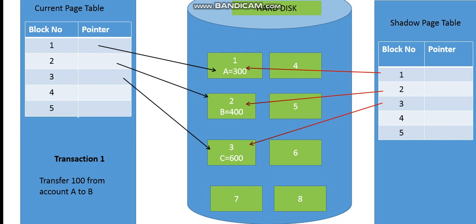So to summarize: the hard disk has blocks, these blocks have records, and the current page table — present in RAM or main memory — has block number pointers which point to the blocks present in the hard disk.